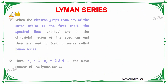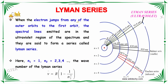Now we will talk about the Lyman series. When the electron transitions from any of the outer orbits to the first orbit, the spectral lines emitted are in the ultraviolet region, and they are said to form a series called the Lyman series. If n1 is equal to 1 and n2 equals 2, 3, 4, the wave number of the Lyman series is given as ν̃ = R(1 − 1/n2²).